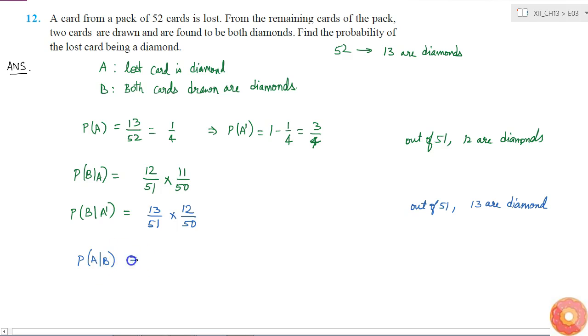From Bayes' theorem we can find it like this: This will be probability of B given A times probability of A, divided by probability of B given A times probability of A plus probability of B given A complement times probability of A complement. This is our Bayes' theorem. I know all of these values, so I will put them.